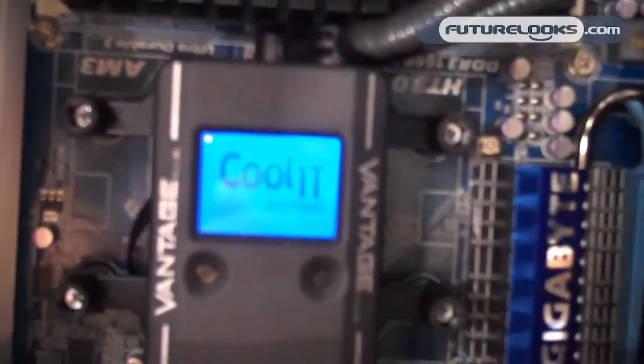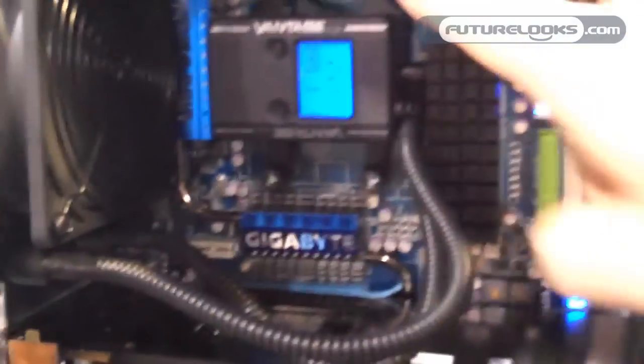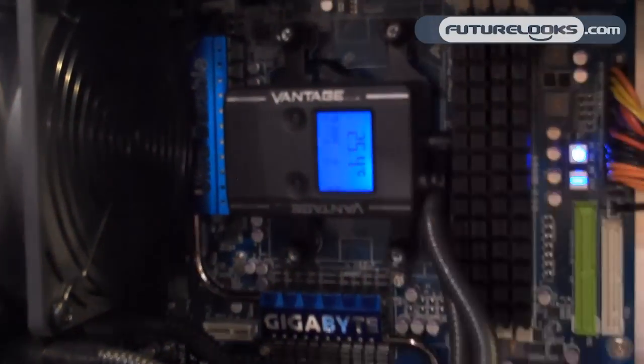The Vantage ALC, which is the highly anticipated self-regulating computer-controlled cooling system that Coolit Systems announced at CES, will be shipping very shortly. In fact, Futurelooks just launched an exclusive, and I believe this is a worldwide exclusive review of the Vantage ALC.